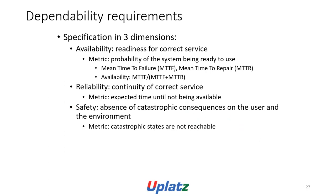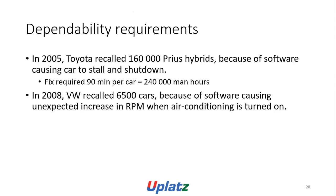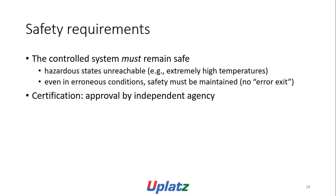Dependability requirements have three dimensions: availability (readiness for correct service — metric: probability the system is ready to use, mean time to failure, mean time to repair); reliability (continuity of correct service — metric: expected time until not available); safety (avoidance of catastrophic consequences on the environment — metric: catastrophic states are not reachable).